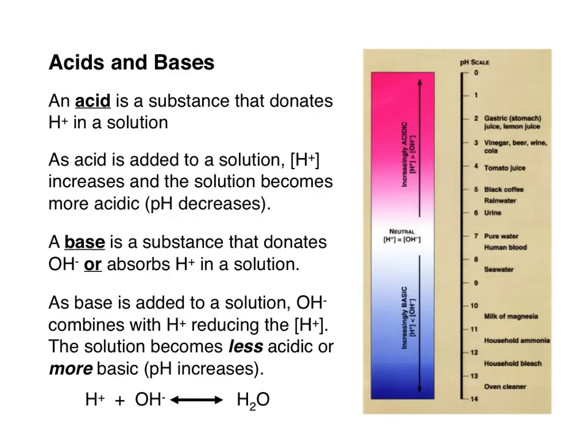If the H+ concentration increases, then the pH must be decreasing. Those are acids. What are bases? Typically, bases are substances that don't release H+ into solution but instead release OH- into solution. Alternatively, bases can absorb H+ from a solution, decreasing the amount of H+ in solution and increasing the pH. When H+ in solution combines with OH-, they form water — and the take-home message is that H+ concentration decreases when base is added, causing the pH to go up.